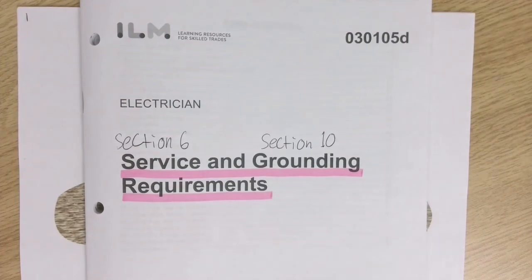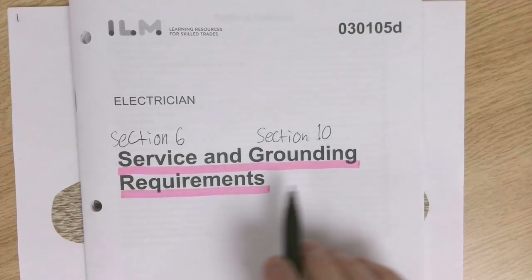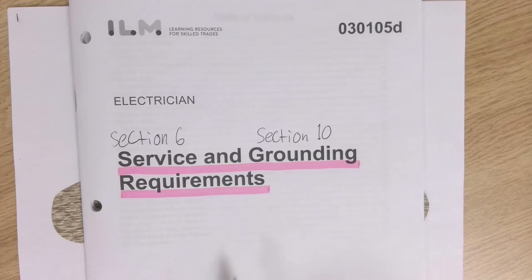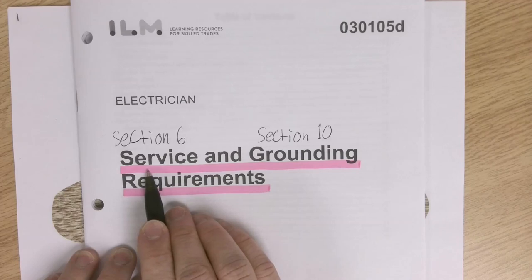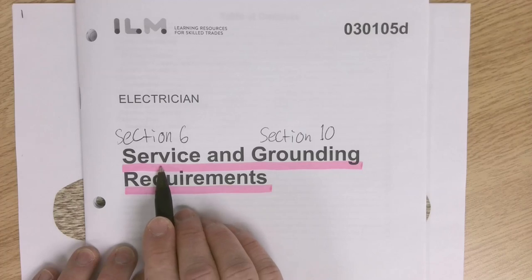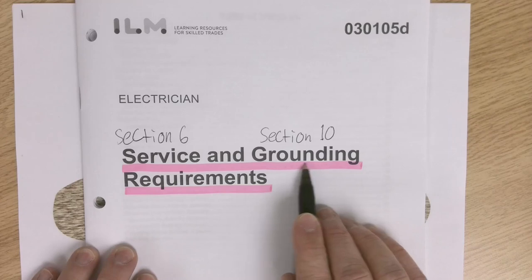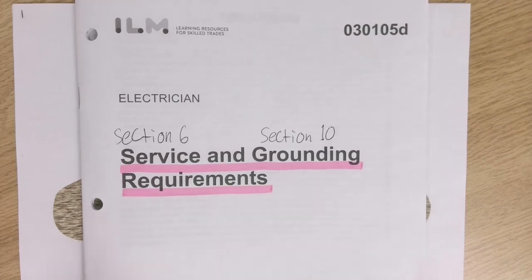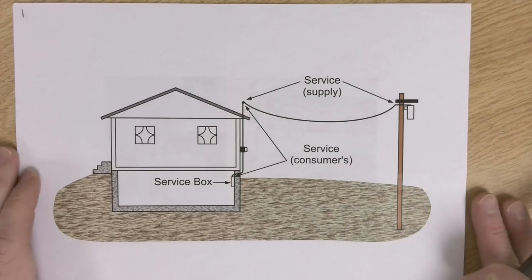Hello everyone. Today's lecture is going to be on service and grounding requirements, which in simplest terms is how we get electrical energy to buildings — both residential and commercial — and how we make it safe once we get that electrical energy into the building. Let's start off with actually getting it there.